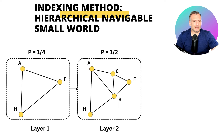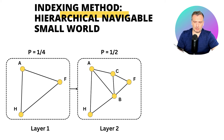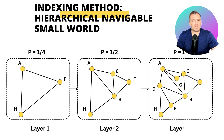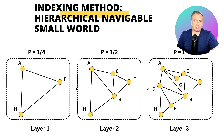Then we create another layer where we input the same vectors, but this time with a higher probability. This creates intermediate-length connections. You can have as many layers as you want, but the last layer is the same as Navigable Small World, with a probability of 1 to input each of the vectors. The connections in this last layer tend to be shorter.